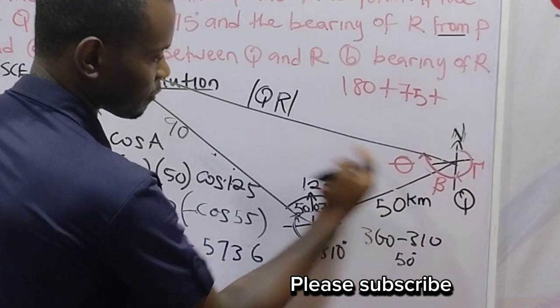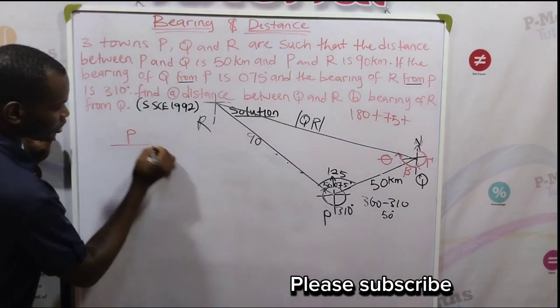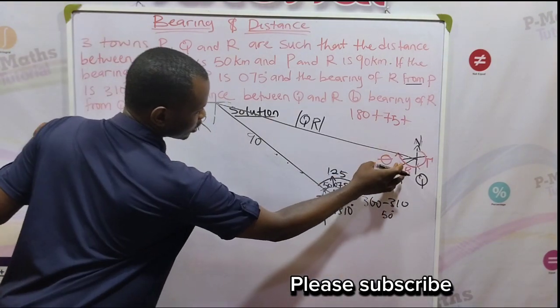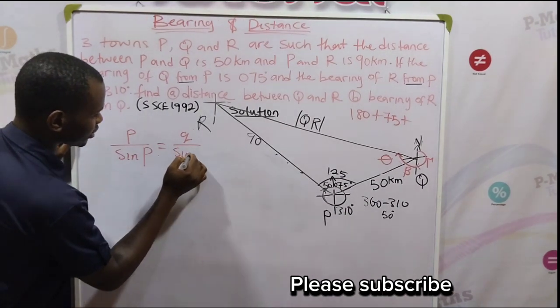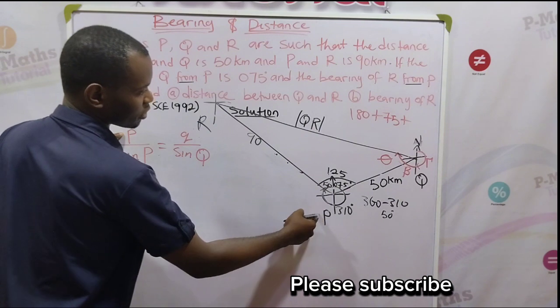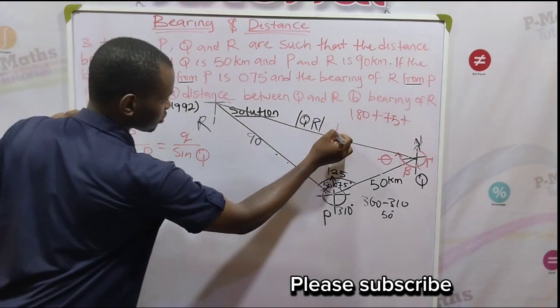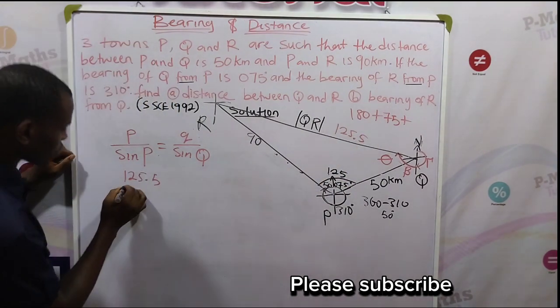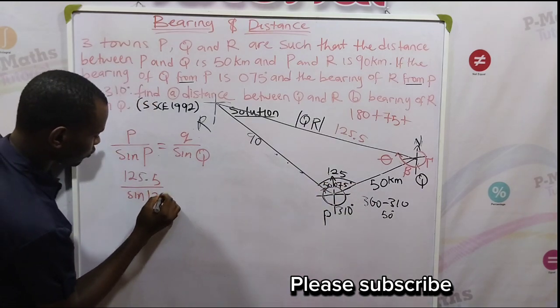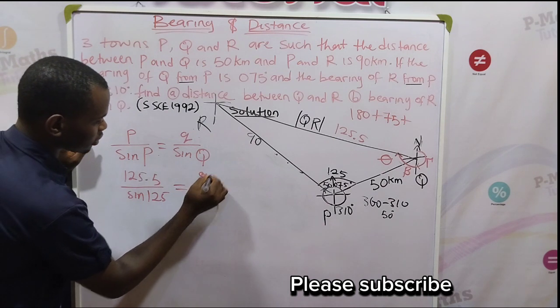To get theta we use sine rule. I will be using the letterings on this diagram. Small letter P, I am using the given angle 125 is over sine capital letter P, because we are looking for the angle here. So I will use Q, small letter Q over sine capital letter Q. Let's substitute. Small letter P is a value opposite capital letter P. So here small letter P, that should be 125.5. Over sine capital letter P, that is 125, the interior angle. Because small letter P is the side opposite Q, that's small letter Q, that is 90 over sine theta.